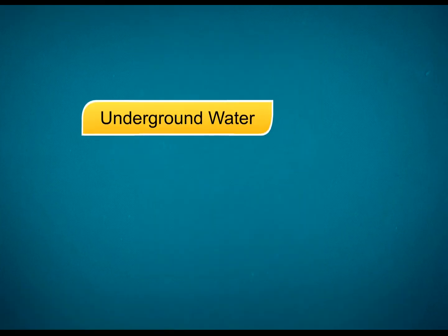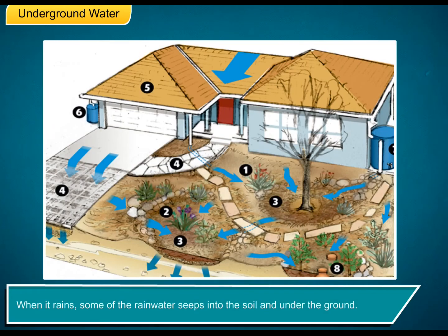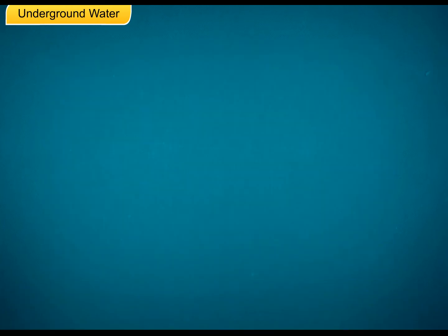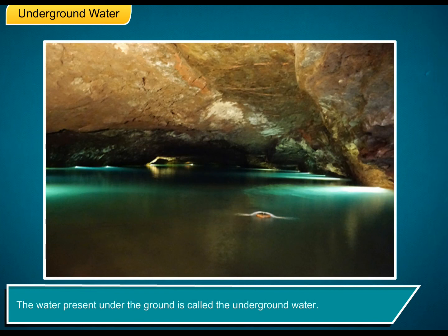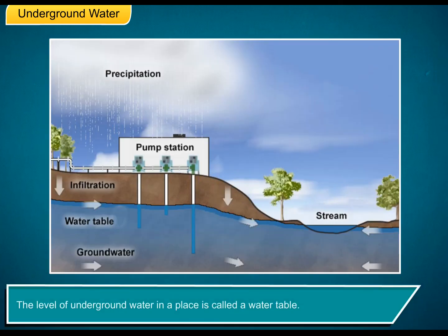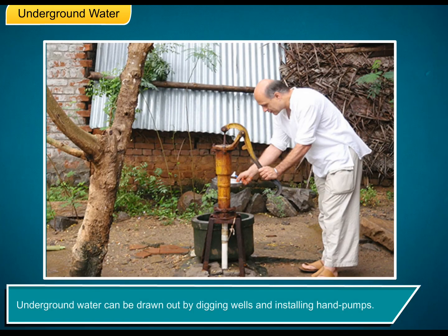Underground water. When it rains, some of the rain water seeps into the soil and under the ground. The water present under the ground is called underground water. The level of underground water in a place is called a water table. Underground water can be drawn out by digging wells and installing hand pumps.